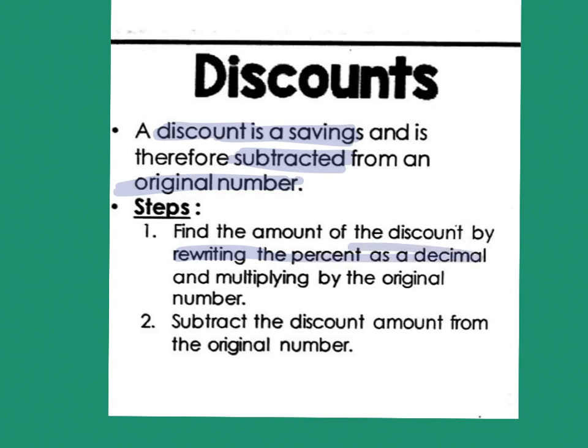However, I do start the same. I'm going to rewrite the percent as a decimal. I'm still going to multiply with the original number. But then here is the big difference. Because it's a discount, you are going to subtract at the end instead of add. Subtract the discount from the original number.